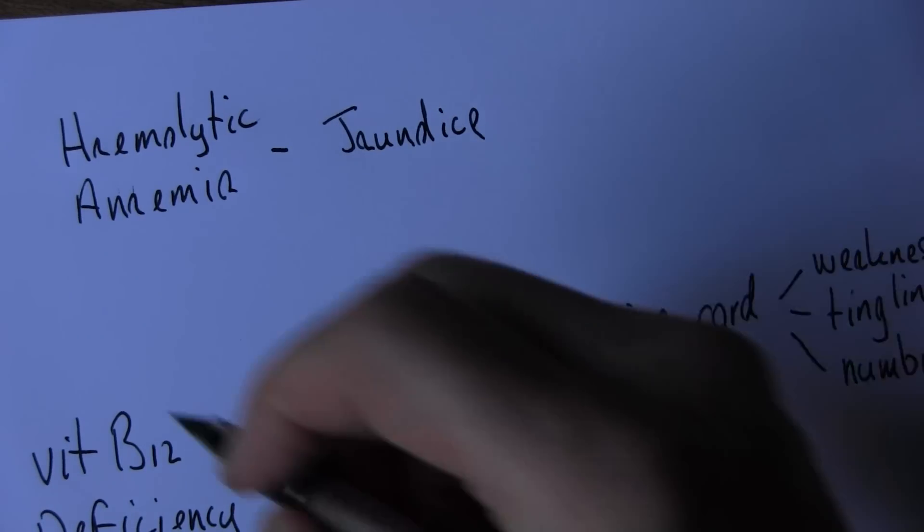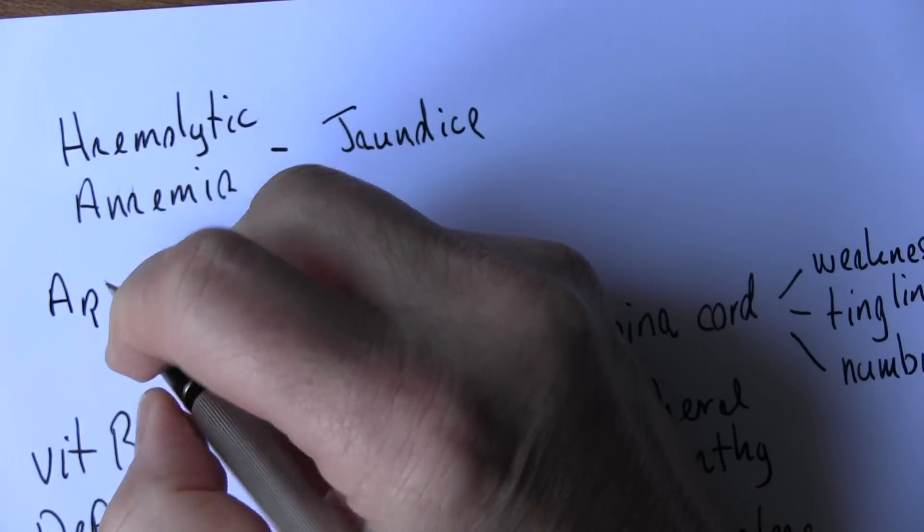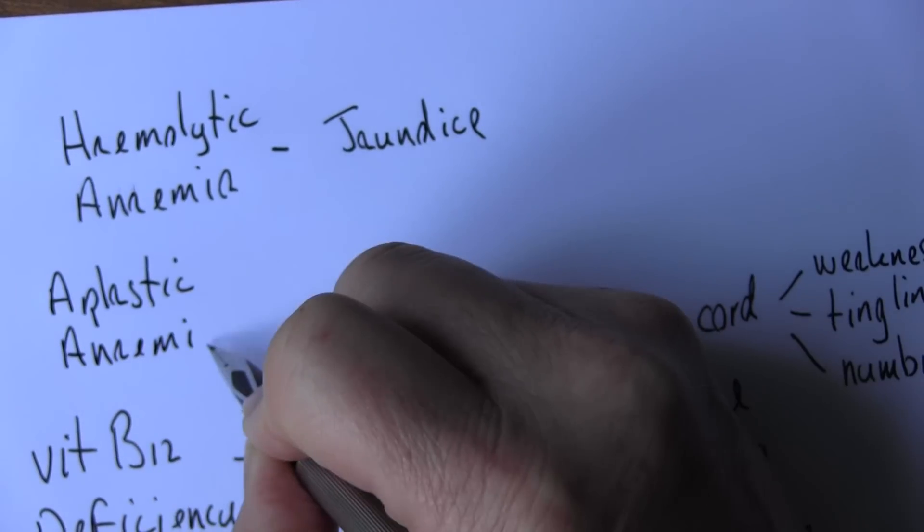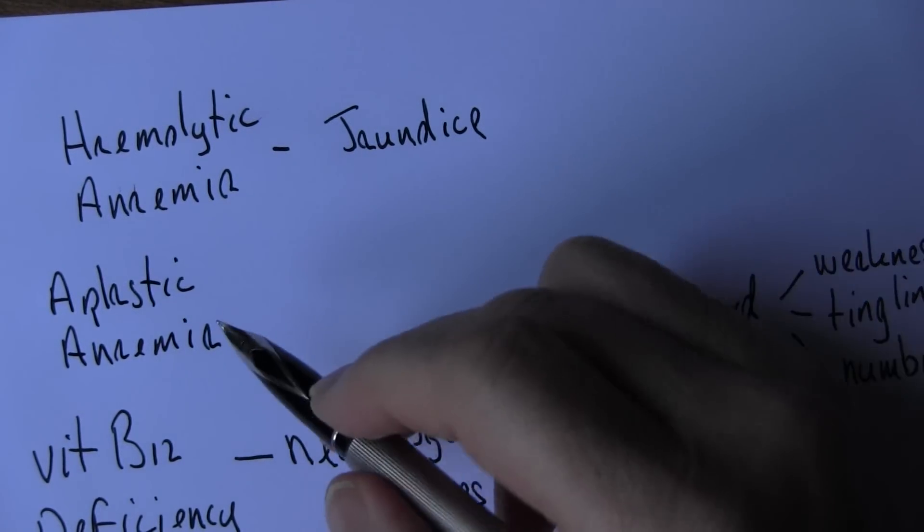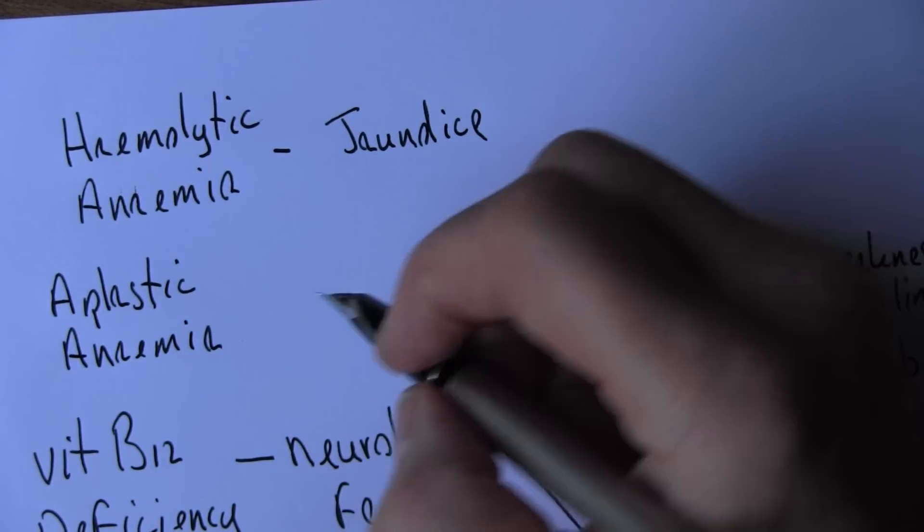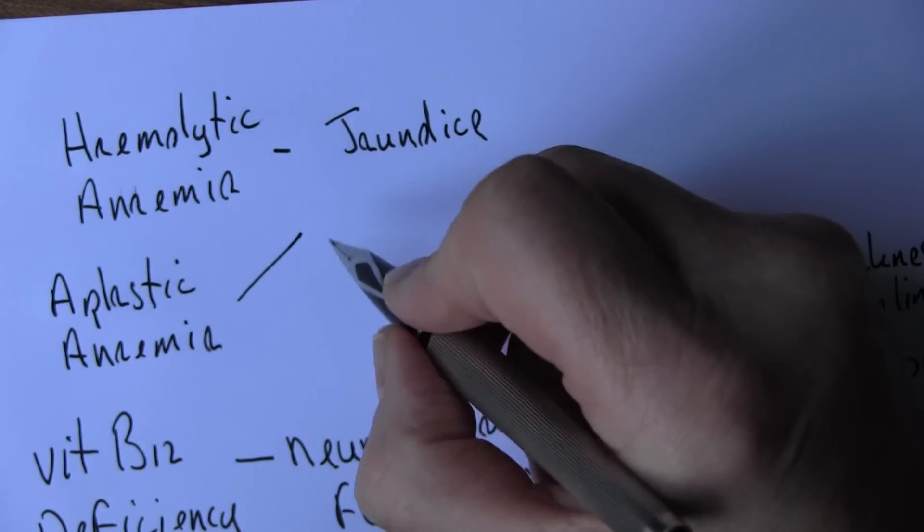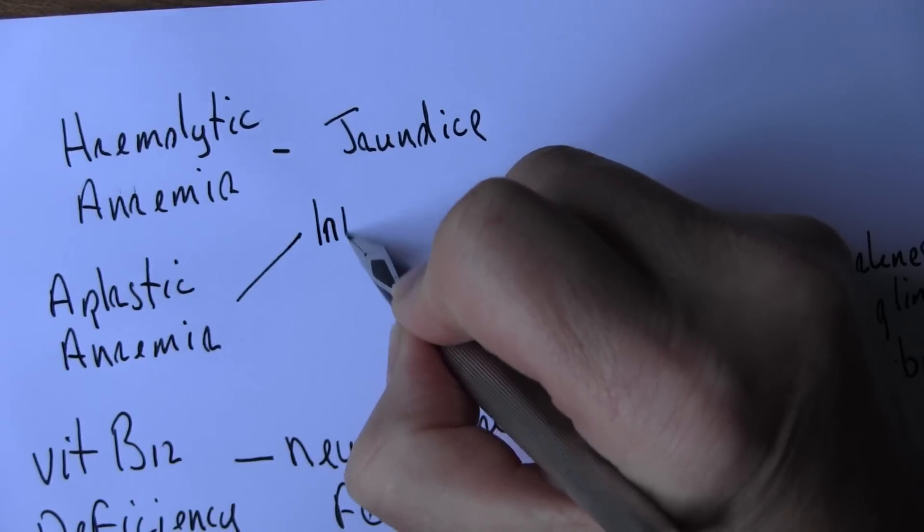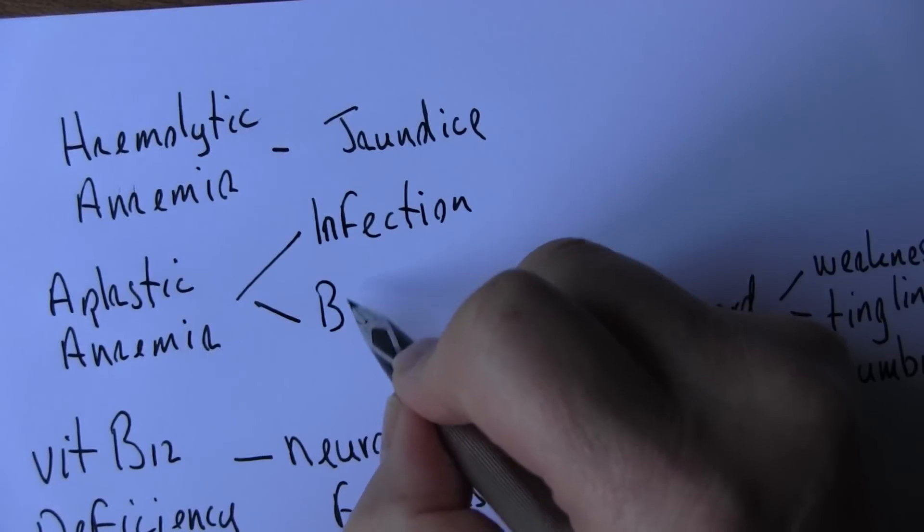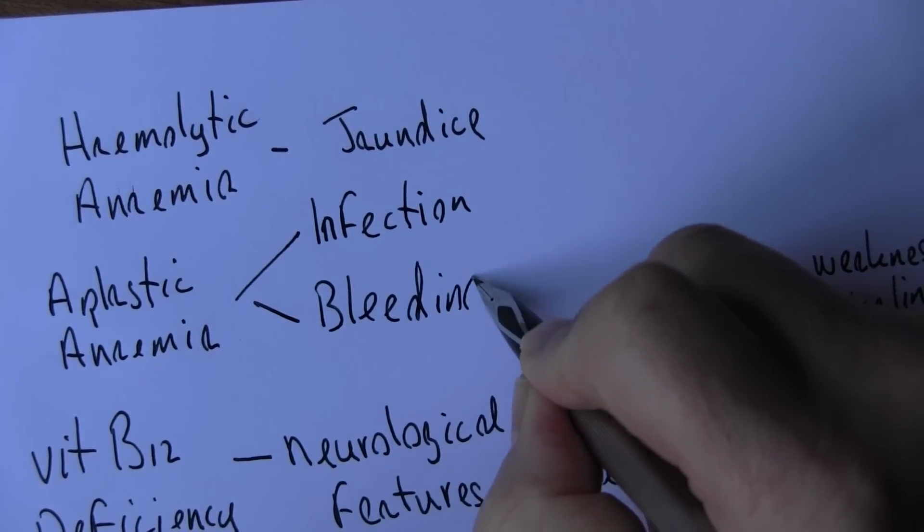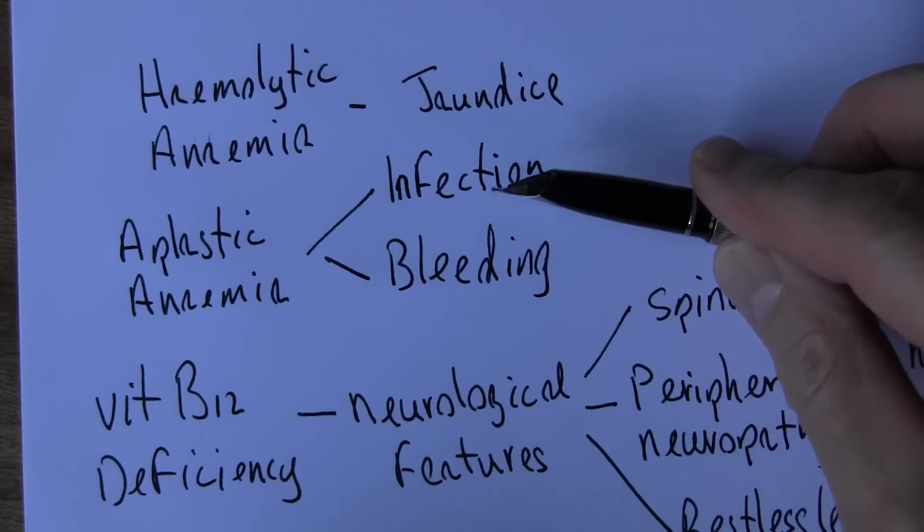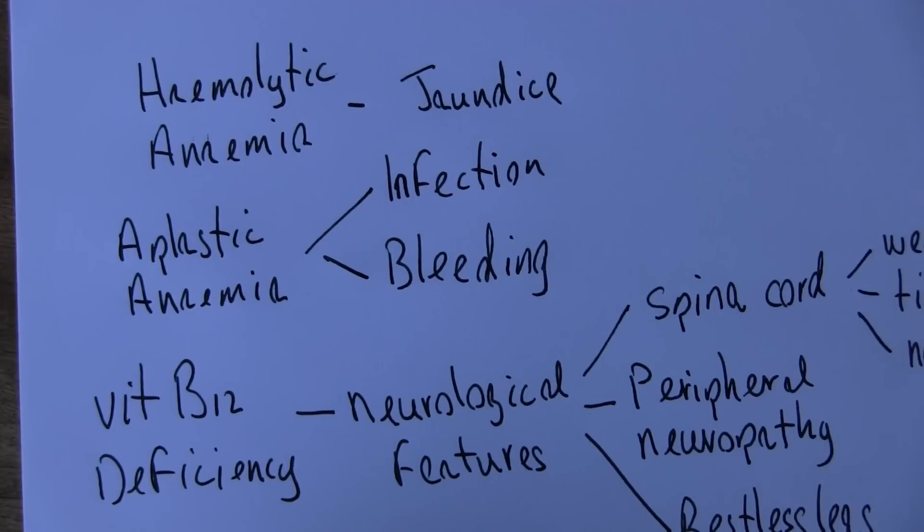Another cause as we mentioned is aplastic anemia. So in aplastic anemia we're going to get a pancytopenia. The bone marrow is just not working properly. And particularly the bone marrow won't produce white cells, so we're at risk of infection. And it won't produce the platelets, the thrombocytes, so we can get bleeding. Again clinical features not related to the anemia but caused by the deficiency, the penia of other essential blood components.